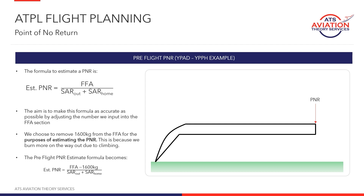For a pre-flight PNR — and you'll know it's a pre-flight PNR because the question will say you're planning a flight from Adelaide to Perth, for example — the formula is: estimated PNR position equals flight fuel available minus 1,600 kilos (the climb allowance), then divide by SAR out plus SAR home.